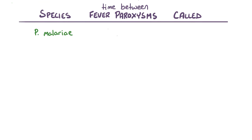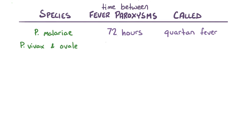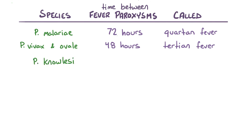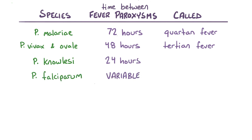For Plasmodium malariae, fevers happen every 72 hours and this is called a quartan fever. For Plasmodium vivax and Plasmodium ovale, fevers happen every 48 hours and are called tertian fevers. For Plasmodium knowlesi, the fever happens every 24 hours. And for Plasmodium falciparum, the pattern can vary — sometimes following the pattern of a tertian fever, while other times the fevers happen daily, earning it the name malignant tertian fever.